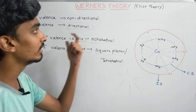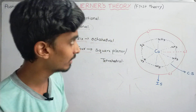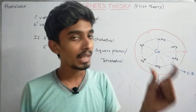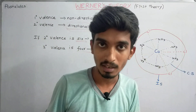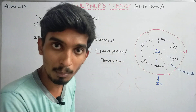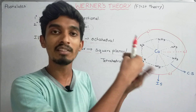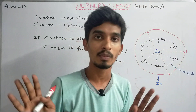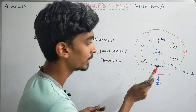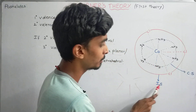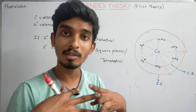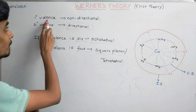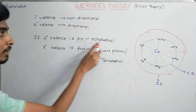To summarize Werner's postulates: an element has two types of valence — primary and secondary. Primary valence is the oxidation state; secondary valence is the coordination number. Primary valence is positive (sometimes 0); secondary valence can be satisfied by positive, negative, or neutral species. There are two spheres: the inner sphere (coordination sphere, strongly bound) and the outer sphere (ionization sphere, loosely bound). Primary valence is non-directional; secondary valence is directional and determines geometry.